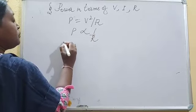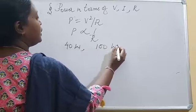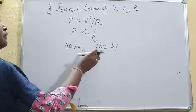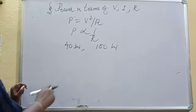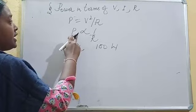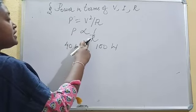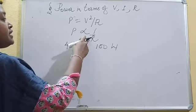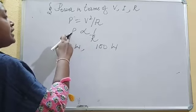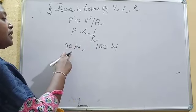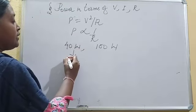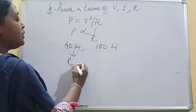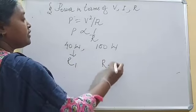Suppose you are given two bulbs, one is 40 watt and another is 100 watt. The question is, which bulb will have the greater resistance? We have seen that power is inversely proportional to resistance. That is, greater the resistance, lesser will be the power. The less power bulb will have the greater resistance. Which has the lesser power? 40 watt bulb. Therefore, its resistance will be greater than the 100 watt bulb.